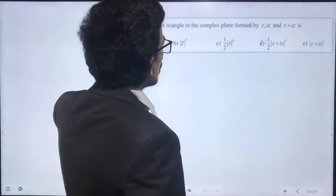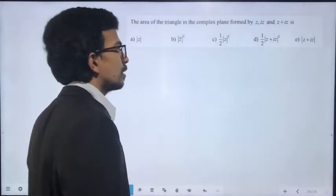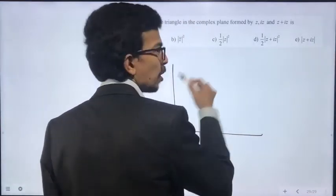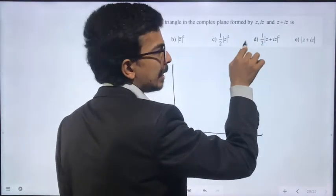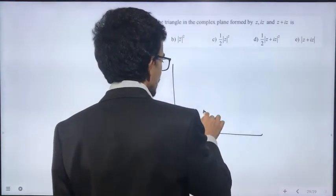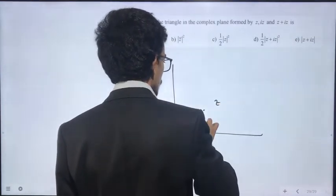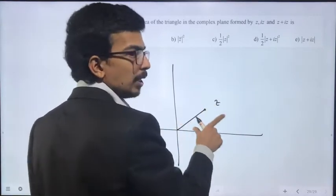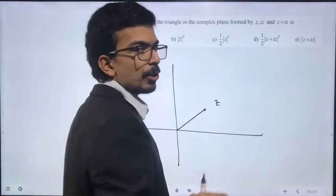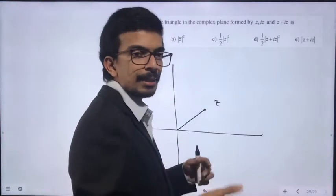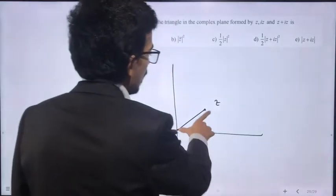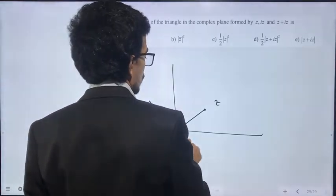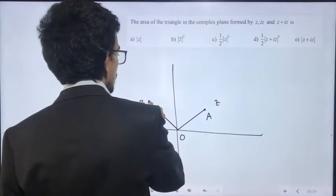Question 69: the area of the triangle in the complex plane formed by z, iz, and z + iz. When z is a complex number, geometrically z = x + iy. iz is obtained by multiplying i, which rotates the complex number 90 degrees about the origin anticlockwise. This is O, this is A, and this is B.